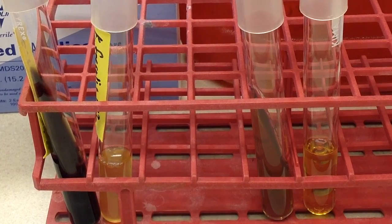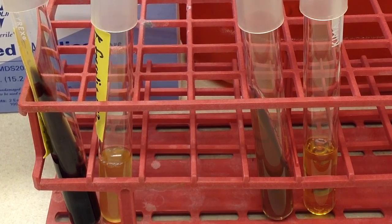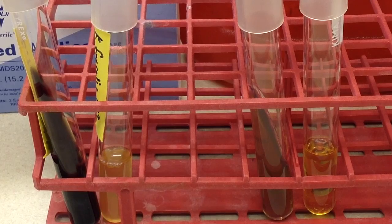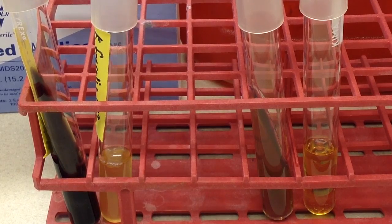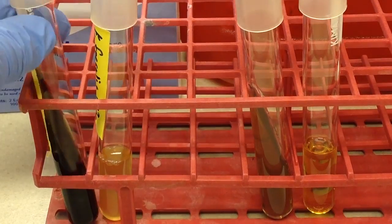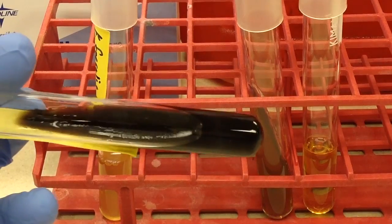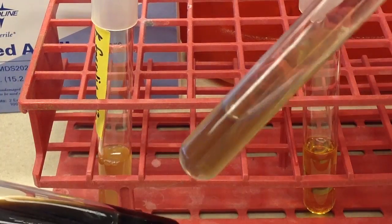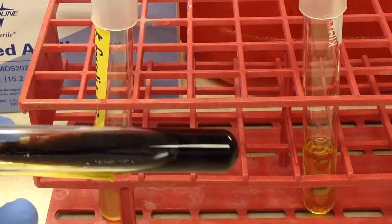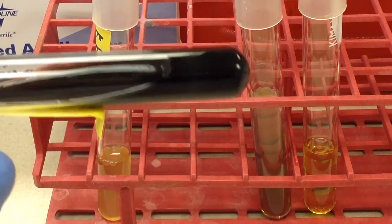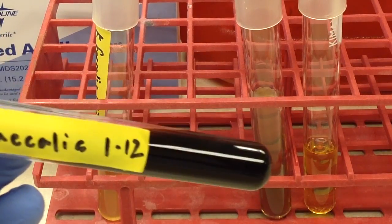So our bile esculin and 6.5% sodium chloride have incubated overnight at 37 degrees in ambient air. And you can see that, this is the regular tube, uninoculated, so it's clearly positive. It's going to turn a black, dark brown to blackish color.